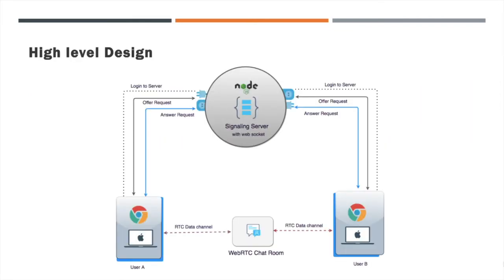Here we have designed a high-level sequence diagram for our chat application. You can see that the Node.js WebSocket is listening for user requests and sending responses back. The main role of this Node.js server is to support WebRTC signaling. Each user will share offer and answer to the server, and the server has to send these requests to the corresponding user. All the UI handling we can do in the HTML page with JavaScript.